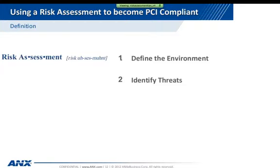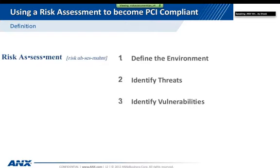The next thing we want to look at is identifying threats — what threats are existent today. An example is an unsecured line used for communication. The third key is identifying vulnerabilities. Vulnerabilities aren't limited to technical issues. Employees, procedures, and monitoring are all part of a growing threat. Security policy and supporting procedures provide no value if employees do not understand or know how to implement them.